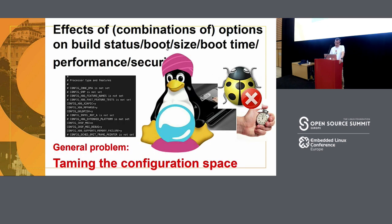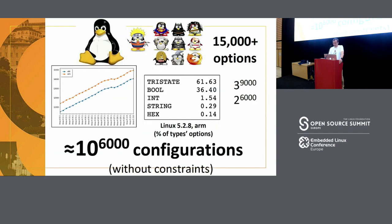The general problem is to tame the configuration space — meaning understanding the effects of all possible combinations of options on build status, bootability, size, boot time, performance, security, whatever. The problem is the number of options: 15,000 options. Most are three-state (yes/no/module) and many are Boolean. If you combine them all, you get a huge number of configurations. I'm voluntarily exaggerating because I'm not counting constraints, but that gives you the order of complexity. It's actually an open research problem to know how many configurations exist in the Linux kernel — we don't know.